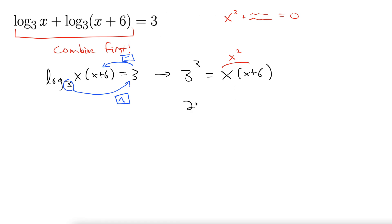3 cubed is 27. So we have 27 equals x squared plus 6x. And now we can set that equal to 0 by subtracting 27. 0 equals x squared plus 6x minus 27.